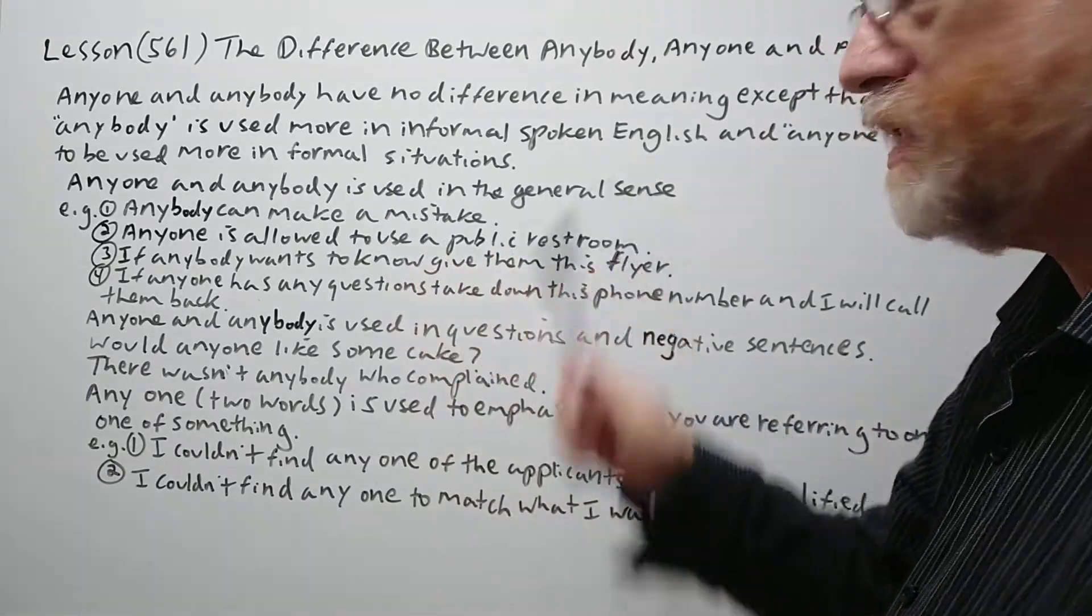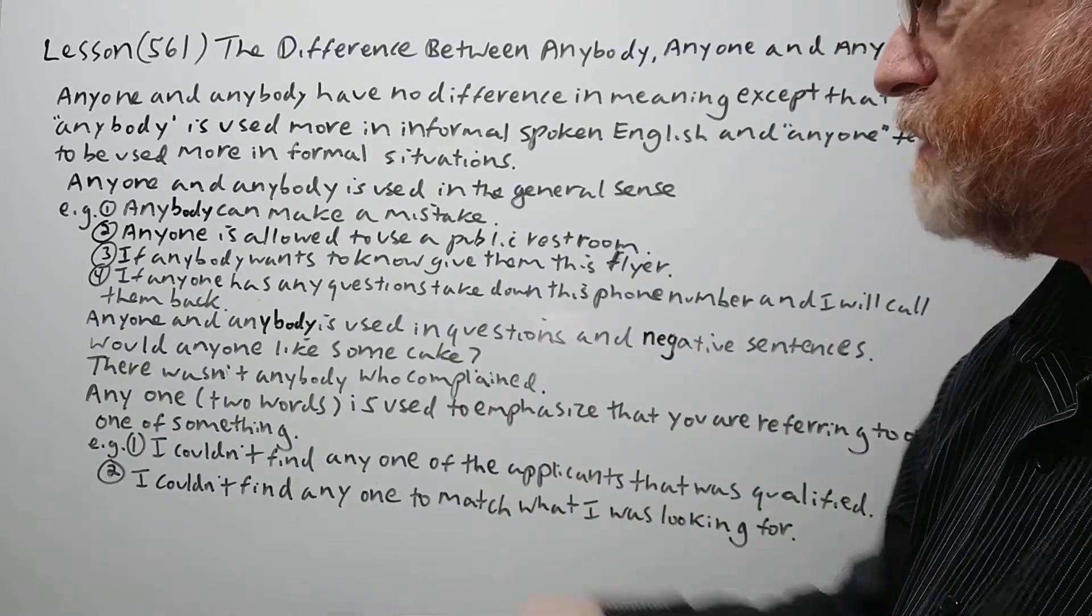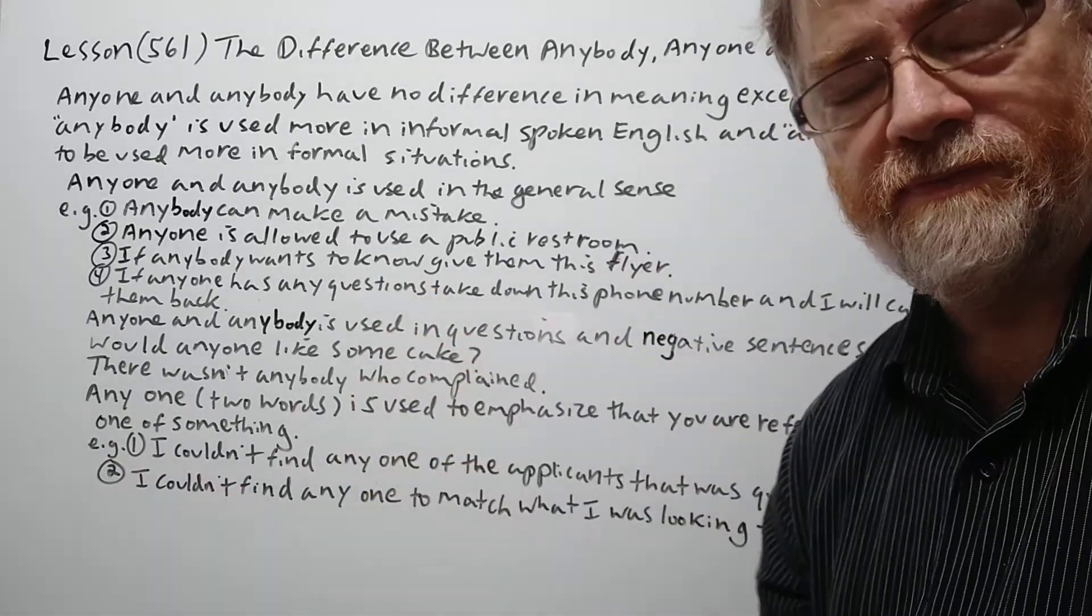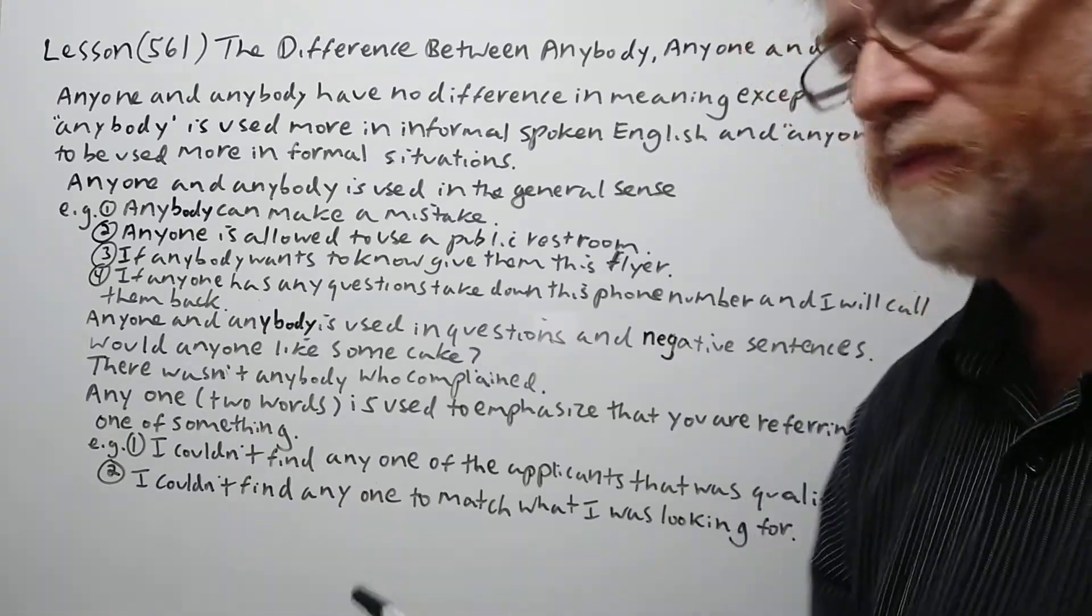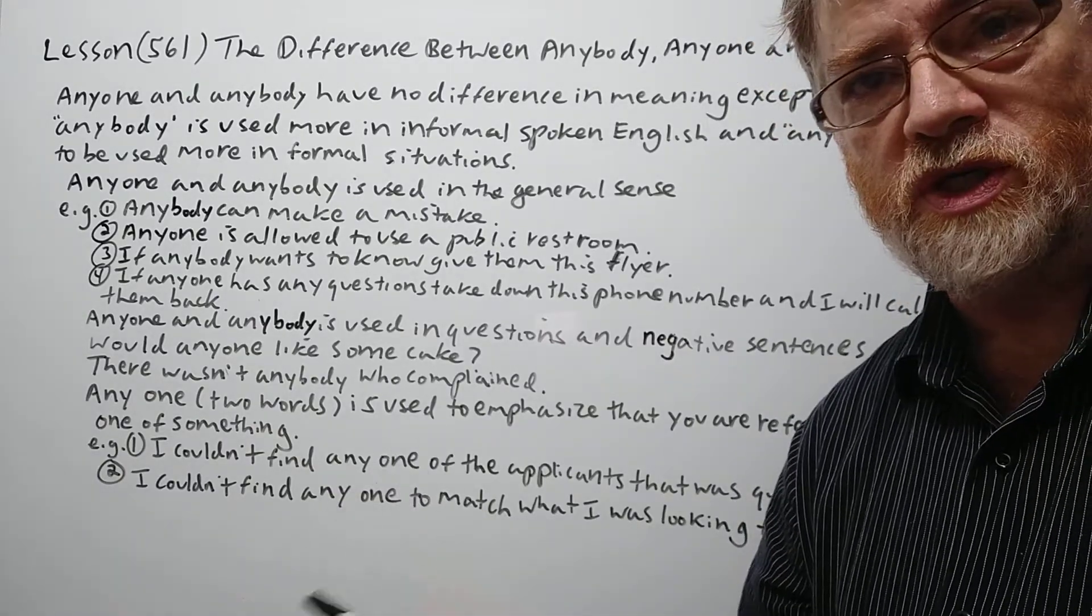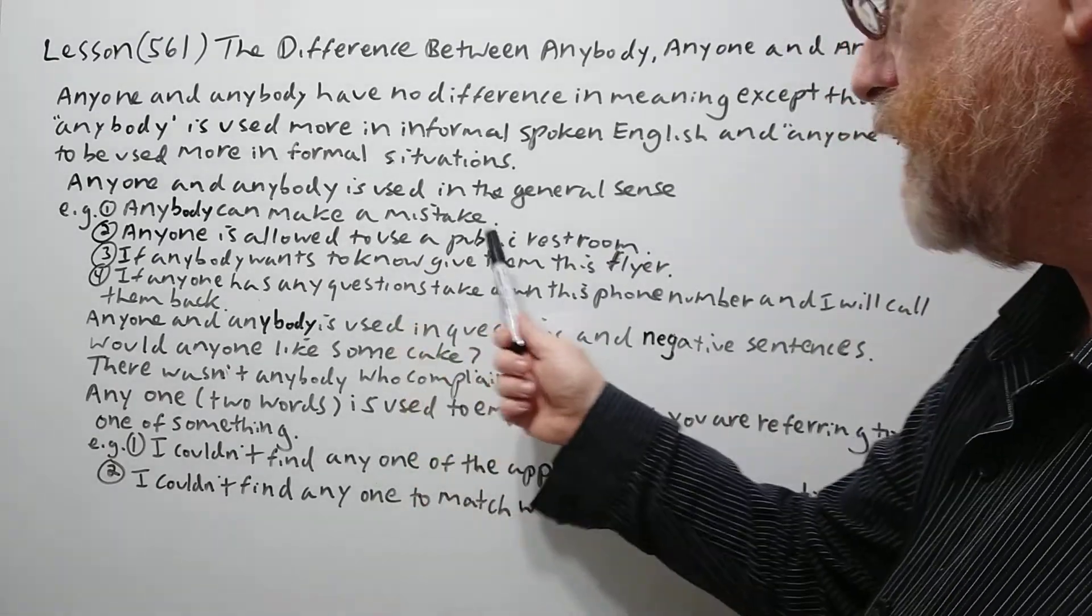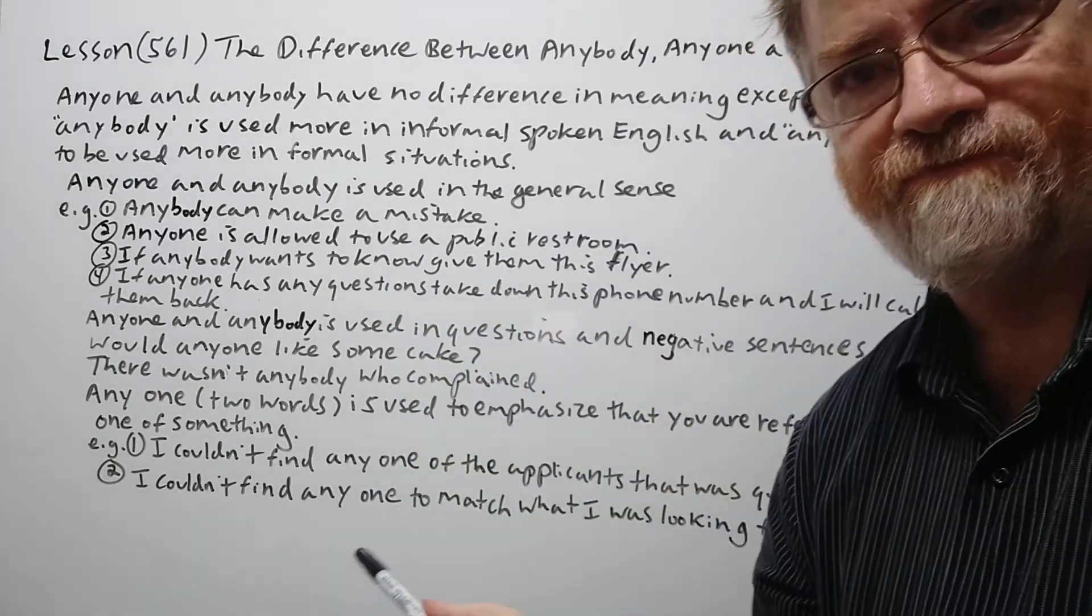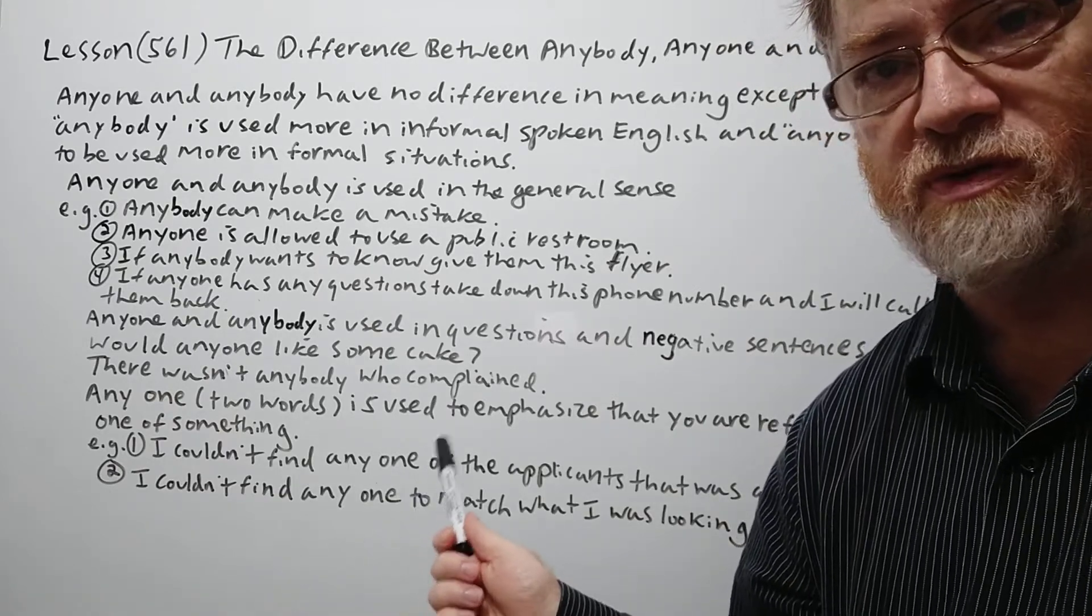Anyone and anybody is used in the general sense. So anybody can make a mistake. Could you say anyone can make a mistake? Yeah, you could say them both. Again, it depends more on the situation which one you'd be more likely to use. Anyone is allowed to use a public restroom. You could say anybody is allowed to use a public restroom too.